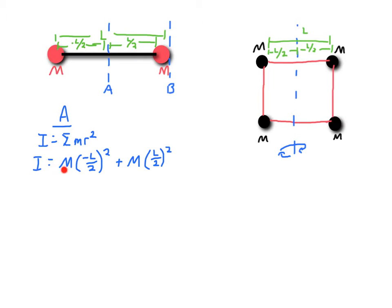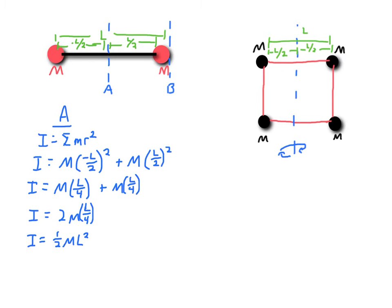Substituting into the equation: I equals M times (negative L over 2) squared, plus M times (positive L over 2) squared. Since these are identical terms, I combine them with a factor of 2 in front. I have 2 in the numerator and 4 in the denominator, giving one half. The moment of inertia for this system rotating about the center of mass is one half ML squared. Note: L must be squared in the expression — correcting that error — giving I_A equals one half ML squared.